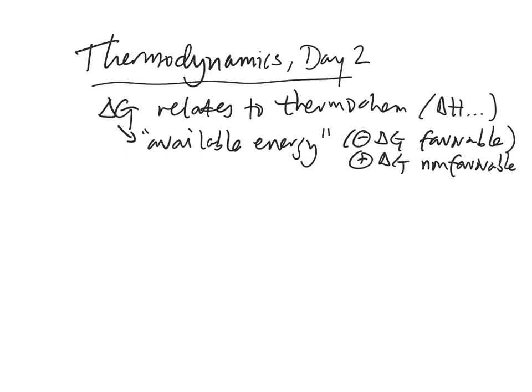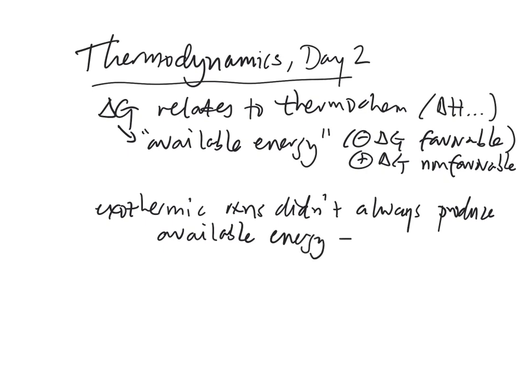So what scientists noticed though is that just because the reaction was exothermic didn't mean that it had available energy. So exothermic reactions didn't always produce available energy. In other words, just because a reaction has a negative delta H doesn't mean that it has a negative delta G. So a negative delta H doesn't always lead to negative delta G. And that's kind of an interesting idea because an exothermic reaction tends to be favorable but is not guaranteed to be. And so scientists sort of realized that there was another factor. This is something that they had begun to study in the late 1800s and they ended up coming to this idea of what's called entropy.